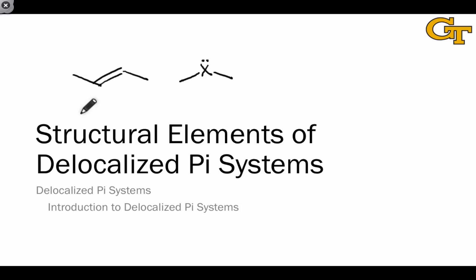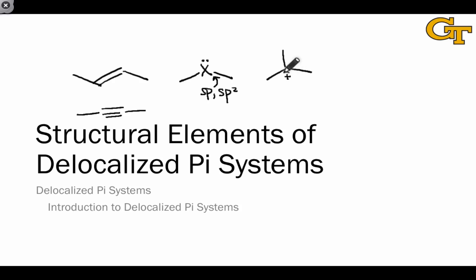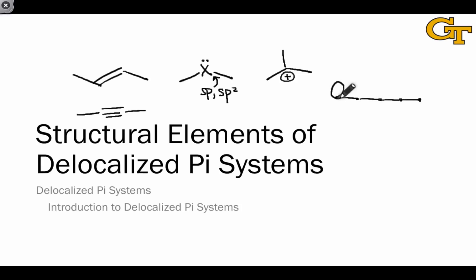The structural determinants of delocalized pi systems are exactly the same as the structural determinants of resonance, minus sigma bonds and sigma-star anti-bonding orbitals. So we're looking for things like double bonds, triple bonds, lone pairs associated with sp or sp2 hybridized atoms so that the lone pair can occupy a p orbital, and six-electron building blocks such as carbocations in which the empty orbital is associated with an unhybridized p orbital. When these structural features are linked together, we end up with a series of atoms — these may be carbon or heteroatoms — on which adjacent p orbitals can overlap strongly in a pi-type fashion, giving rise to highly delocalized molecular orbitals.